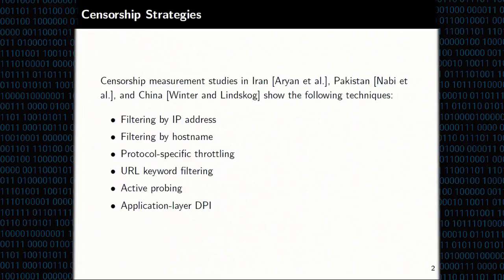Censorship happens in many different ways and there have been numerous measurement studies to determine what's going on. Techniques include blocking by IP address, filtering by hostname, keyword searches, protocol-specific throttling — for example, allowing webpages but blocking SSH — and more advanced techniques like active probing and application-layer deep packet inspection to detect censorship-resistant systems.